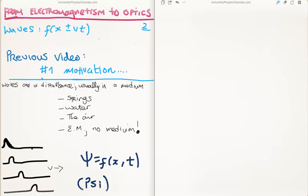In this video I'm going to continue on with my tutorials moving from electromagnetism to optics. This is video number 2 and I'm going to discuss waves. Specifically I'm going to show you why we use f is x plus or minus v times t.